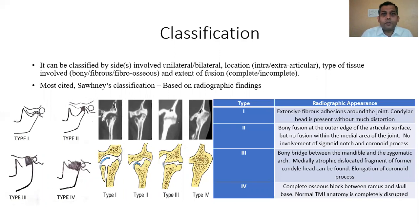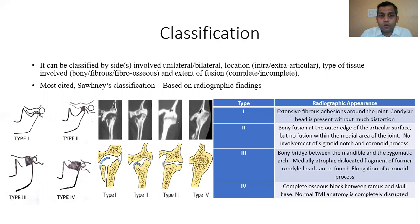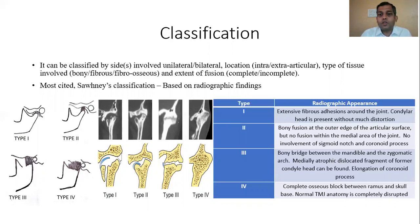Touching on classification of temporomandibular joint ankylosis: it may be classified based on sides involved — unilateral and bilateral; based on location — intra- and extra-articular; based on tissue type — bony, fibrous, and fibro-osseous; and based on extent — complete and incomplete. The most cited is Sawhney's classification based on radiographic findings, dividing TMJ ankylosis into four types, where type 1 involves fibrous adhesions around the joint and type 4 represents a complete bony block between the ramus and skull base.